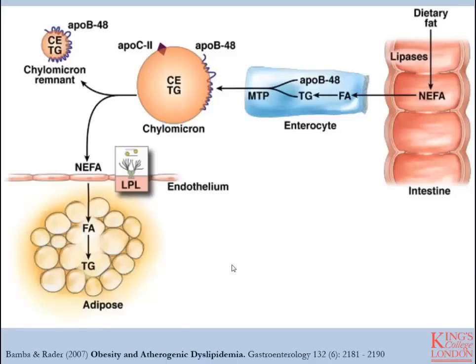Here's a diagram which illustrates this same process without the analogy. Dietary fat enters the small intestine, lipases break down the fatty acids and aid in their absorption into the enterocytes, fatty acids are repackaged as triglycerides, ApoB48 is produced, and the triglycerides and cholesterol esters are packaged into chylomicrons and secreted into circulation.